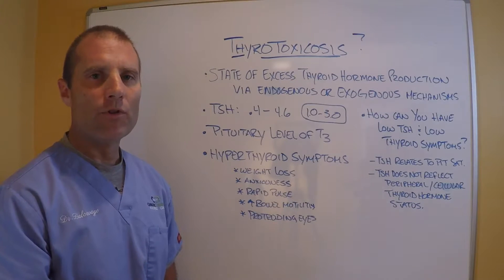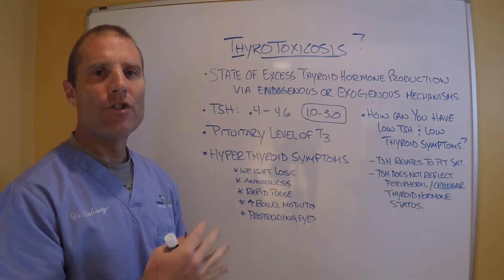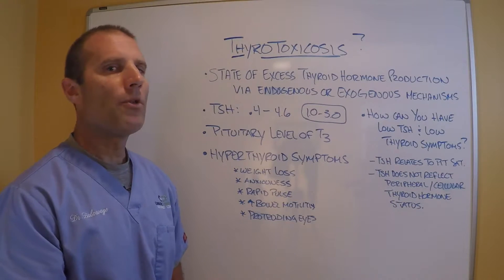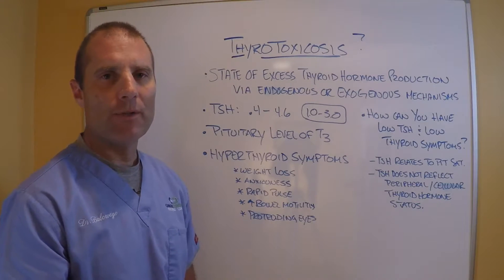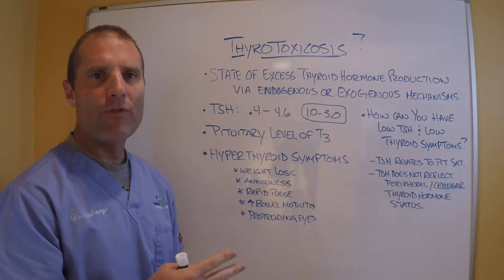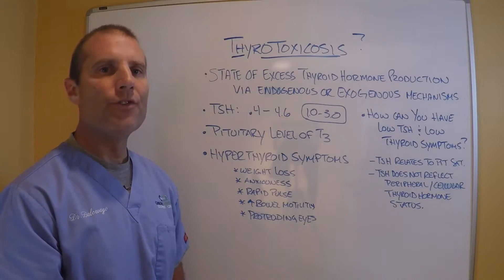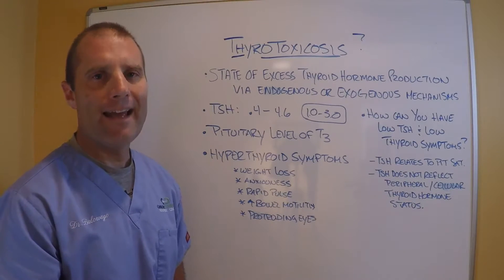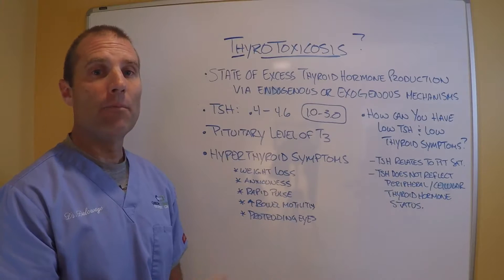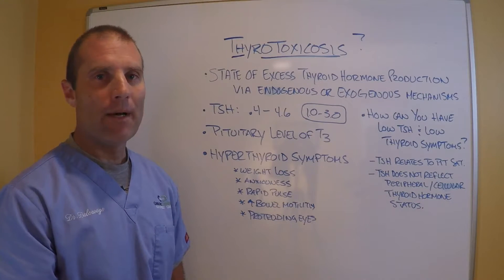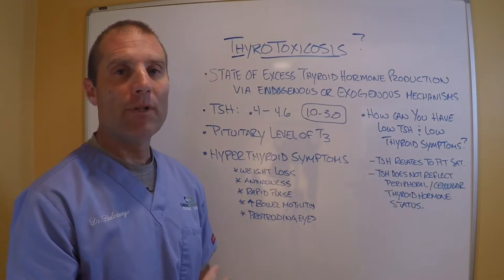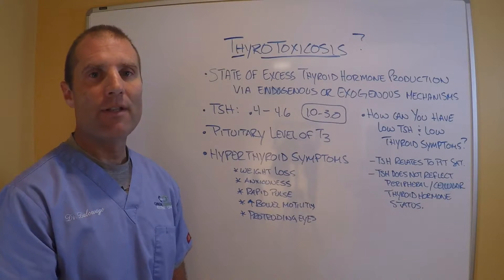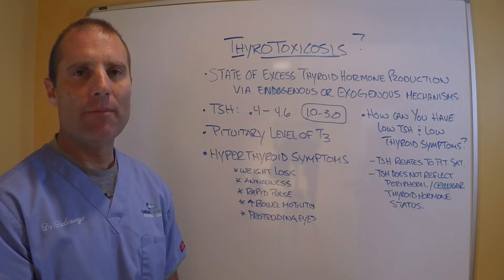The pituitary gland, under stress conditions, has increased T4 to T3 conversion, while the peripheral cells actually have decreased T4 to T3 conversion. There's also decreased transport of thyroid hormone into the cells, decreased conversion of T4 to T3, and an upregulation of T4 and T3 to inactive hormones that actually compete with active T3 at the binding site. So you could have plenty of T4 and T3 in the bloodstream but can't get it into the cells.